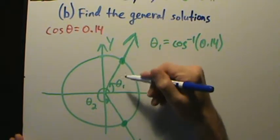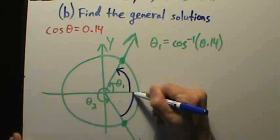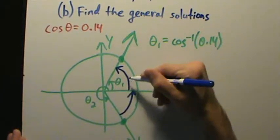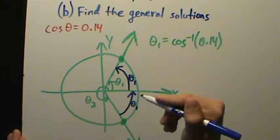So because of the symmetry, this angle here and this angle here are exactly the same. Well, this angle here we know is theta 1, and so this angle here must also be theta 1. How does that help us?